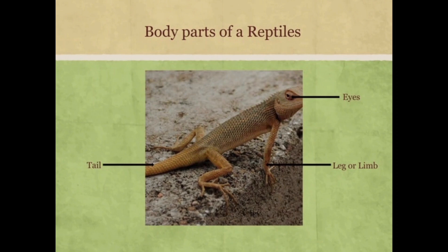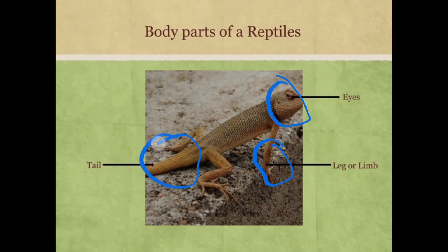There are three main body parts of reptiles: their legs, eyes and tail. They use their eyes to see, their long legs or limbs to walk, and they have a long tail.